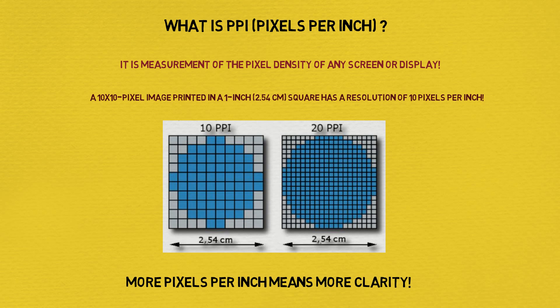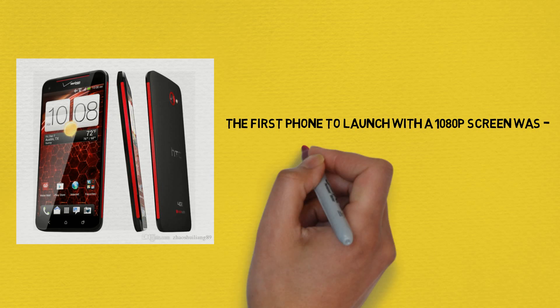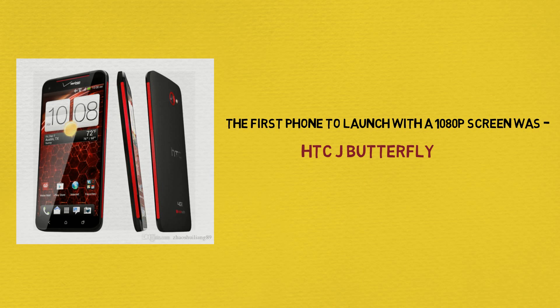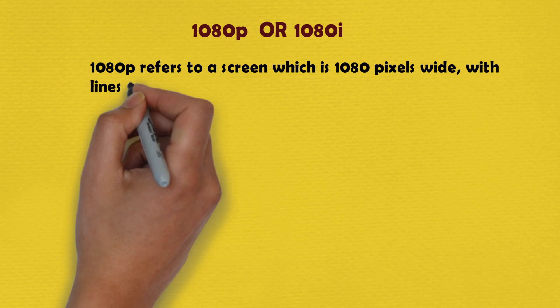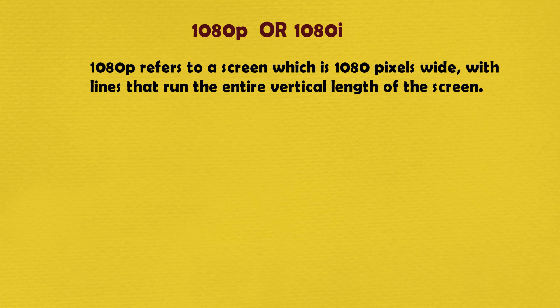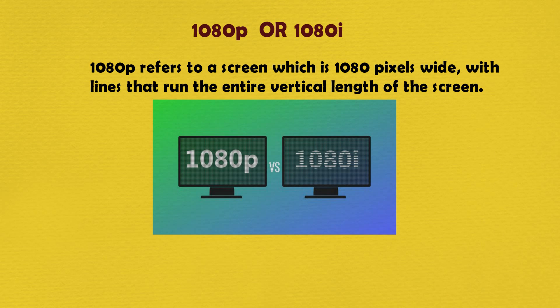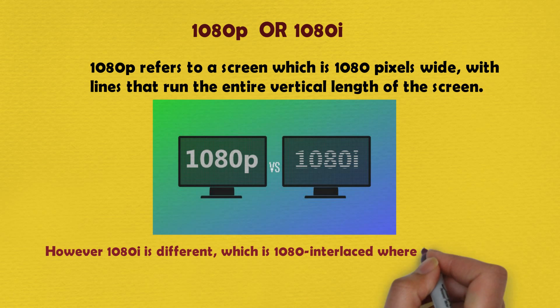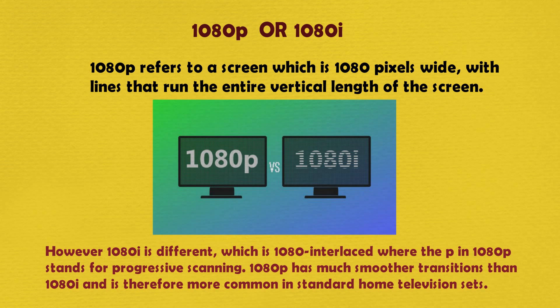But this also depends upon the size of the screen and from how far or near you are going to look at it. The first phone to launch with a 1080p screen was the HTC J Butterfly, released only in Japan and as a Verizon exclusive in the US as the HTC Droid DNA. It used a 5 inch screen. 1080p refers to a screen which is 1080 pixels wide with lines that run the entire vertical length of the screen. This isn't to be confused with 1080i, which is 1080 interlaced — the P in 1080p stands for progressive scanning. 1080p has much smoother transitions than 1080i and is therefore more common in standard home television sets.